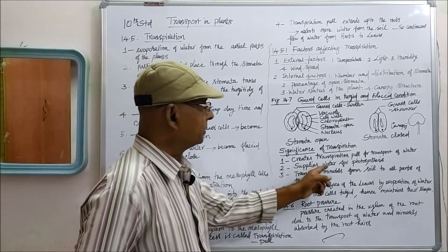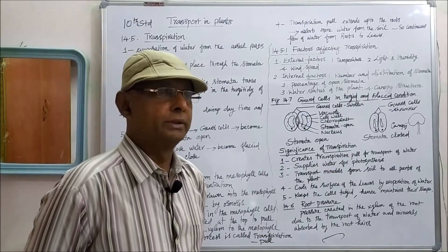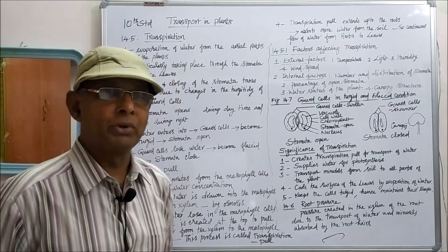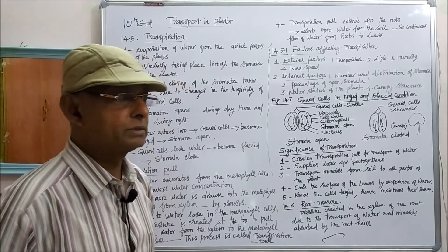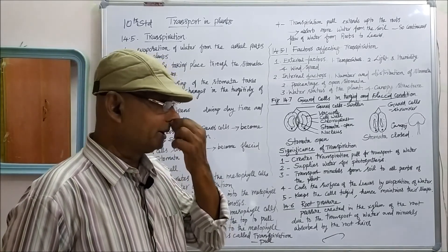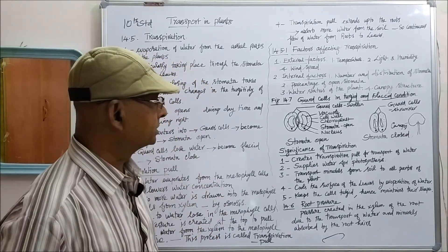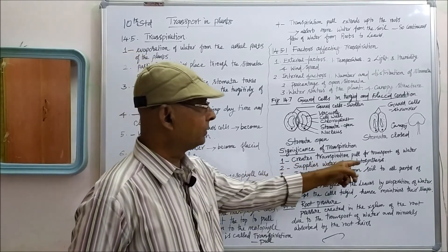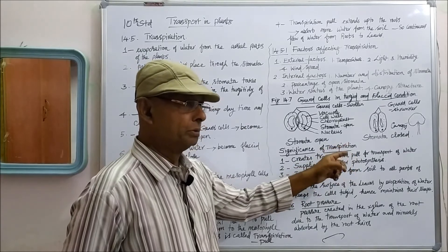Second, transpiration supplies water for photosynthesis. In the leaves and aerial parts of the plant, photosynthesis takes place in the green parts. Water is one of the raw materials for the preparation of carbohydrates during photosynthesis. The plant supplies water for photosynthesis due to transpiration.